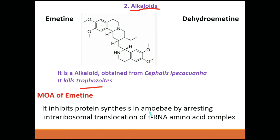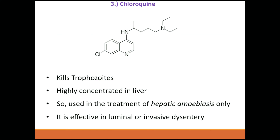Emetine works to inhibit and arrest the intra-ribosomal translocation of tRNA amino acid complex. Chloroquine works only extra-intestinally — it kills trophozoites and is highly concentrated in the liver. It is used in the treatment of hepatic amoebiasis only, since the liver accumulates more of this drug.